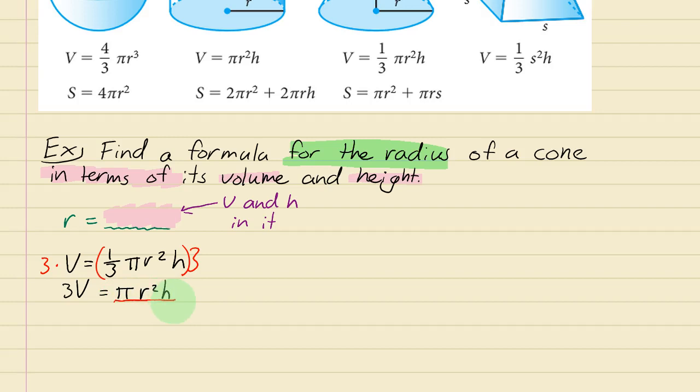And that will make this equation look like 3V over pi h equals r squared. Now to just get r by itself, you can just take the square root of both sides.